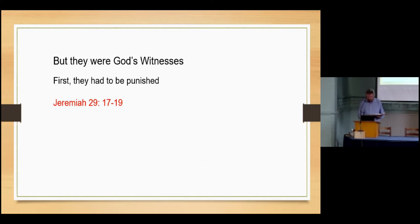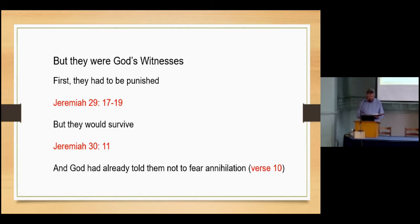But it was also said that they would survive. Coming to the very next chapter, chapter 30 of Jeremiah, and this time verse 11: For I am with you to save you, declares the Lord. I will make a full end of all the nations among whom I scattered you, but of you I will not make a full end. I will discipline you in just measure, and I will by no means leave you unpunished. And God had already told them not to fear annihilation in the previous verse, verse 10: Then fear not, O Jacob my servant, declares the Lord, nor be dismayed, O Israel, for behold, I will save you from far away and your offspring from the land of their captivity. Jacob shall return and have quiet and ease, and none shall make him afraid.